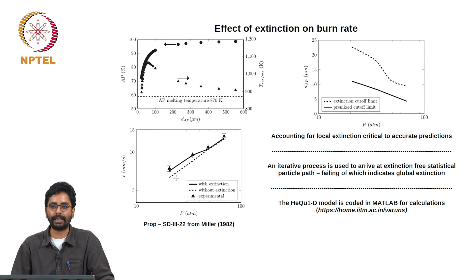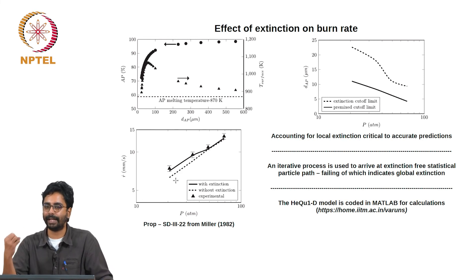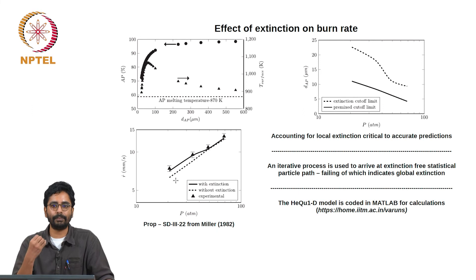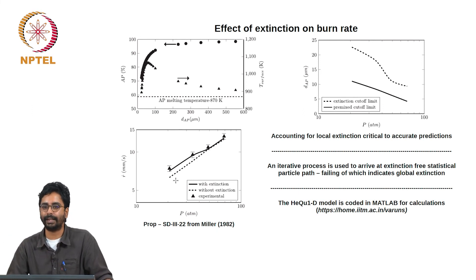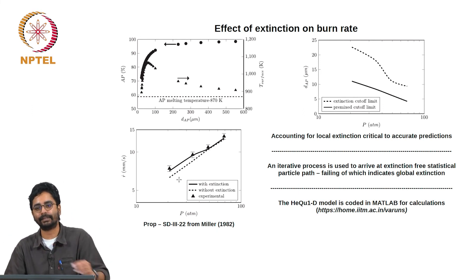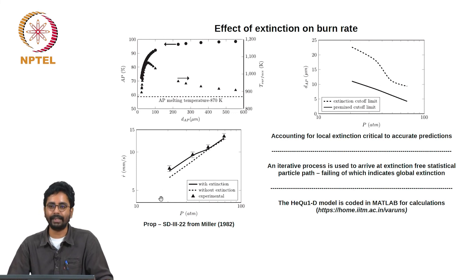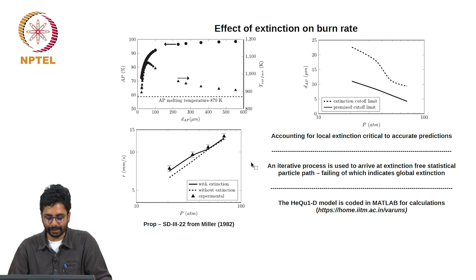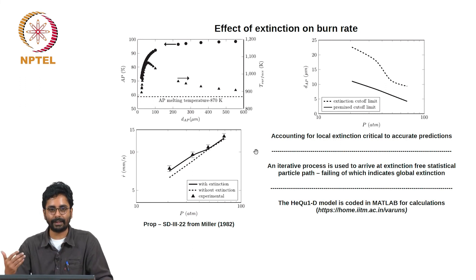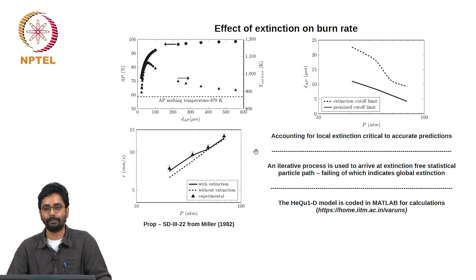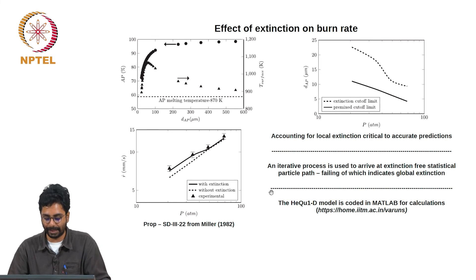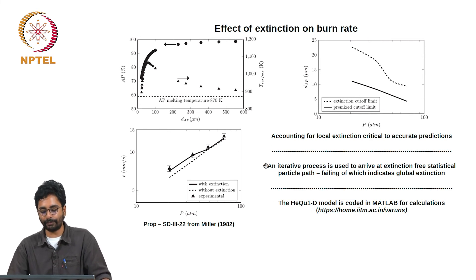The general impression is that you write burn rate as p raised to N and assign significance to N demanding it not change with pressure — but that need not be true. N can be approximated as constant only in certain pressure ranges. A set of small particles or fuel-rich fine particles not burning at low pressures can start burning at high pressures, changing the index. The index can itself be a function of pressure. Accounting for local extinction is critical to accurate predictions.